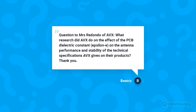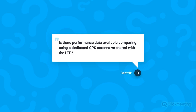The next question: Is there any performance data available comparing a dedicated GPS antenna versus one shared with the LTE antenna? Carmen: There's no specific data to share here, but it is possible to use the LTE antenna to also cover GPS frequencies. However, you need to add a switch or a GPS diplexer to separate LTE and GPS signals, which adds losses of 0.5 dB to 1 dB. Since GPS receive is already very sensitive, we prefer not to add extra losses, so when possible we recommend keeping the antennas separate.